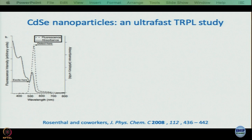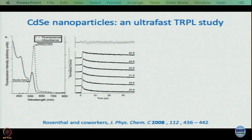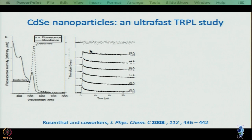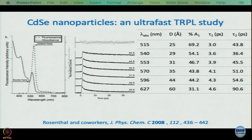What Rosenthal did was look at nanoparticles of different sizes — from diameter 25 Å to 60 Å, so relatively large nanoparticles. In the 25 Å decay you can see a fast first component, which becomes less prominent as size increases. This is a summary of amplitudes and time constants associated with nanoparticles of different sizes, fit to biexponential functions.